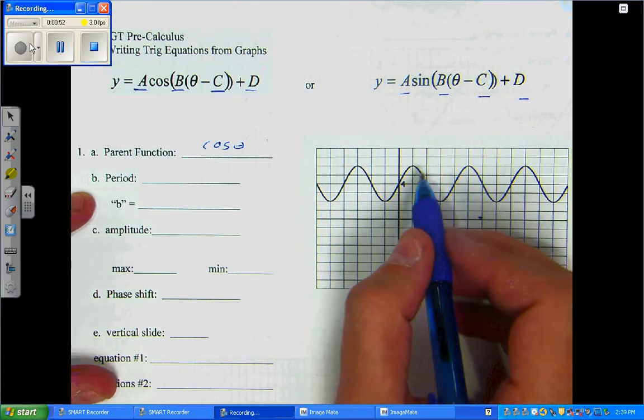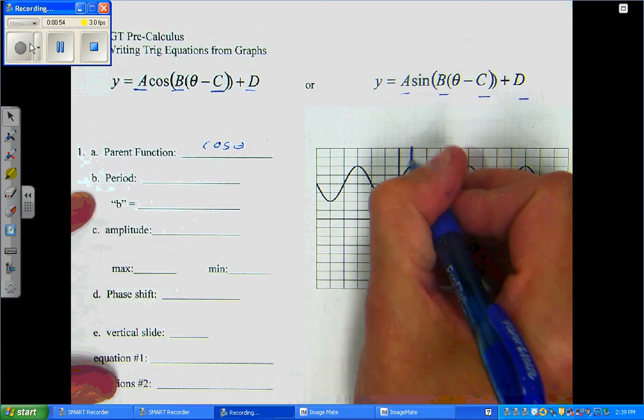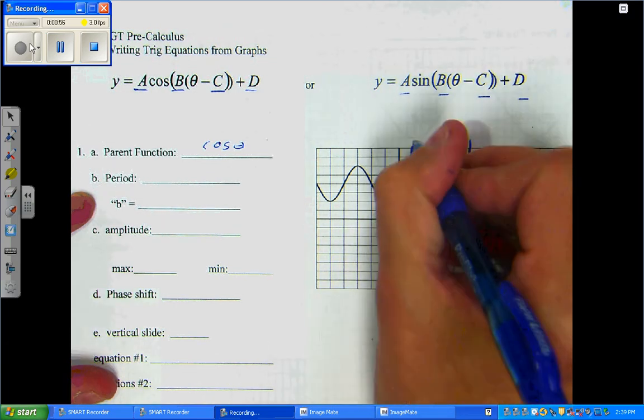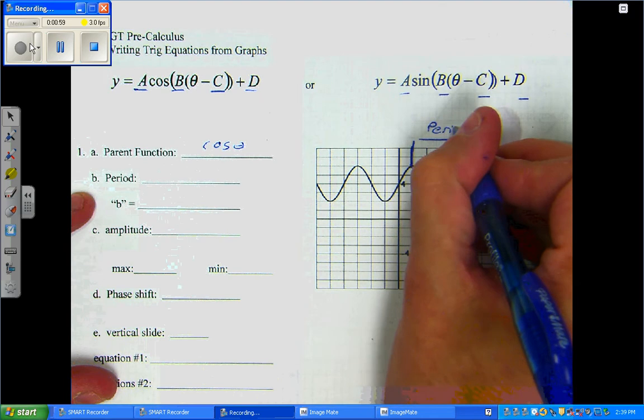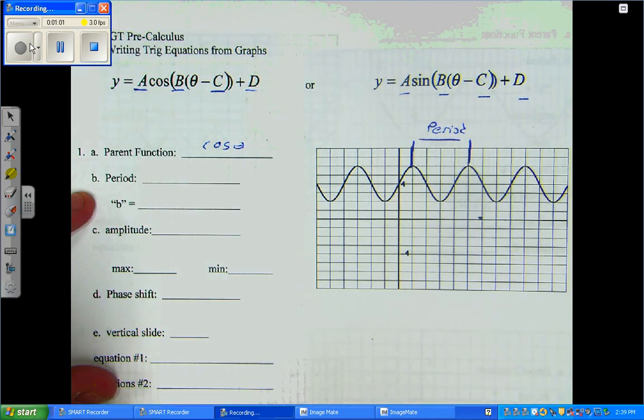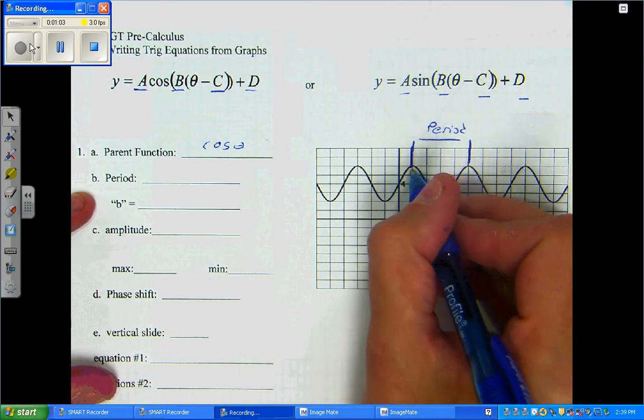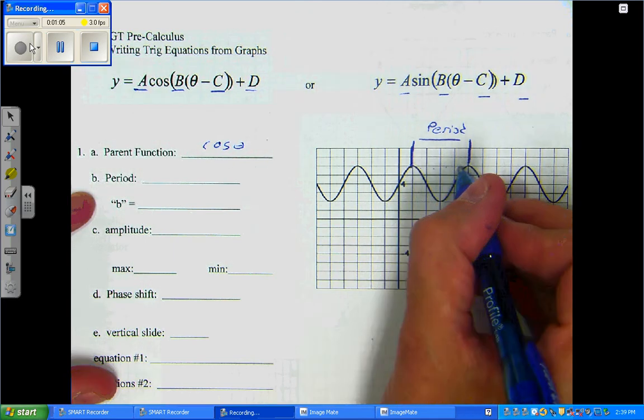The easiest way to find the period is look for the peaks. Here's a peak. Here's a peak. The distance between them is called the period. If we count that distance, 1, 2, 3, 4, we get 4.